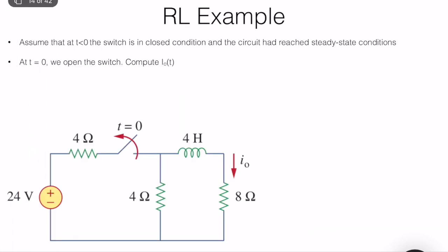Now a slightly different example involving a switch. When t < 0 the switch is closed and the circuit has reached steady-state conditions. So at t = 0⁻ the circuit is at rest. At t = 0 we open the switch and need to compute the inductor current i(t). First we analyze the circuit for t < 0, i.e., at t = 0⁻, to compute the initial condition on the inductance.